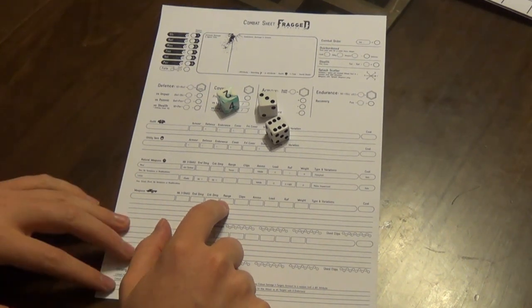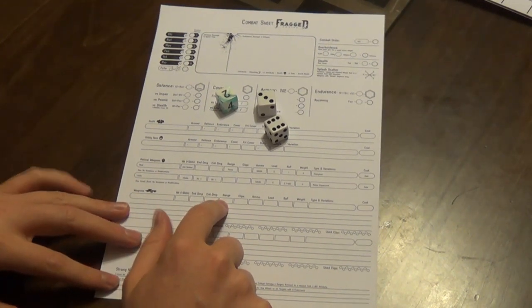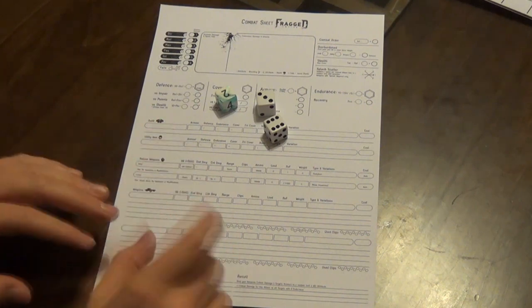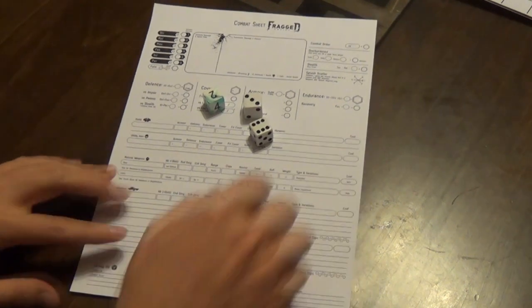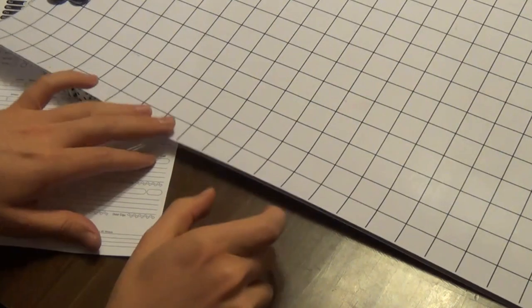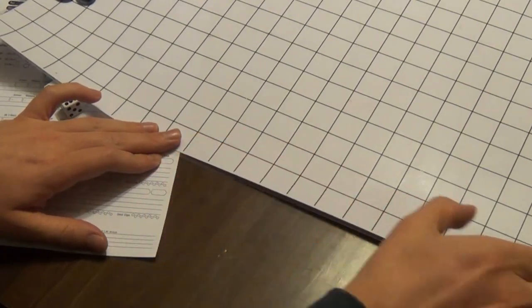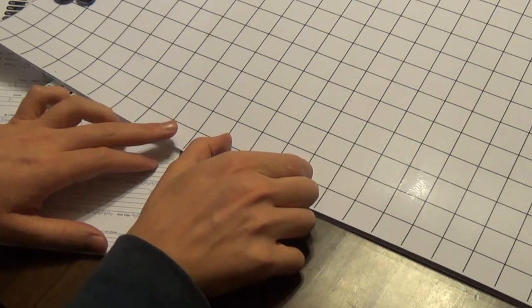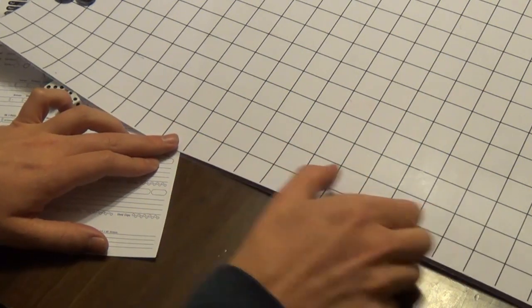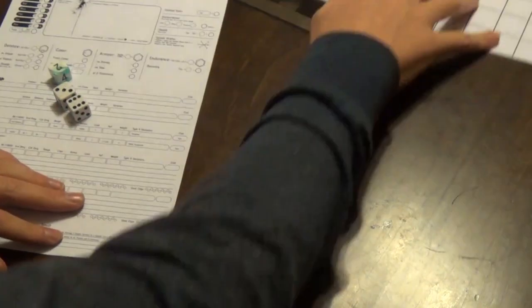Range—that's the range increment of your weapon. We went through that in the attack roll video, so that's measured in increments. Let's say your range is 3, so that would be 3 and 3, then 3, then 3. Your first increment has no penalties, but then negative 2, then negative 4, then negative 6 to your attack rolls.